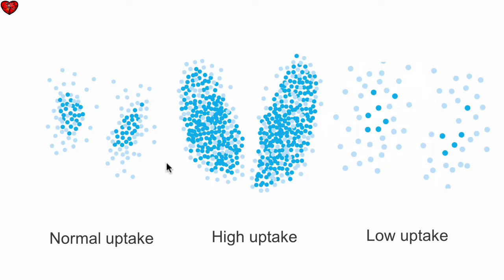The normal thyroid takes up about 15 to 25% of a radiolabeled iodine dose. If the thyroid is overactive and making a lot of thyroid hormone, it's going to take up more of that iodine so it can make more thyroid hormone. It will show an uptake pattern with high uptake, more than 25% of the radiolabeled iodine.